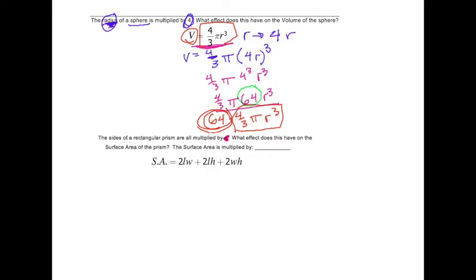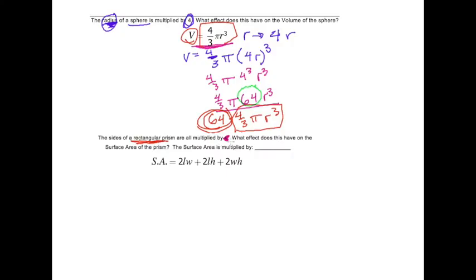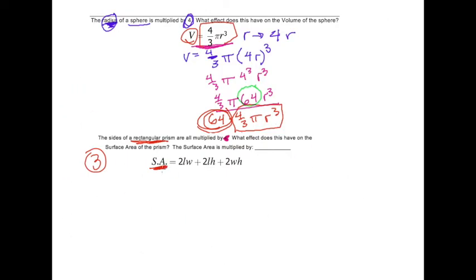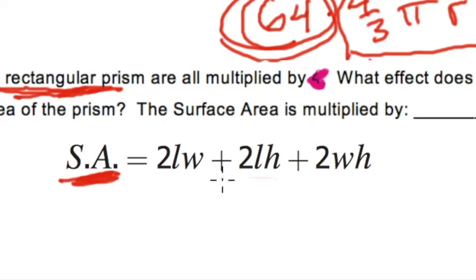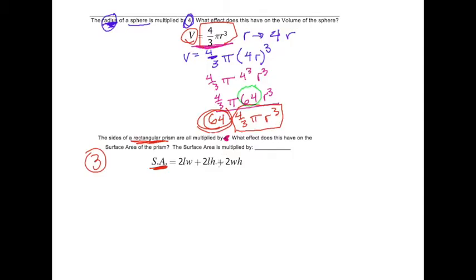Now for the second problem. The size of a rectangular prism are all multiplied by, there's no number here. I'll just say they're all multiplied by 3. What effect does this have on the surface area of the prism? Once again, another formula you don't have to memorize. You're welcome. Here, it's 2LW, length times width, plus 2LH, length times height, plus 2WH, width times height.